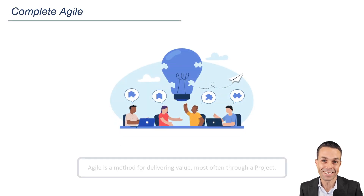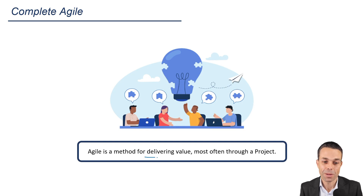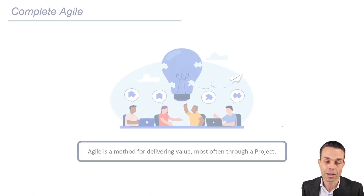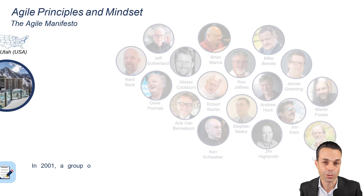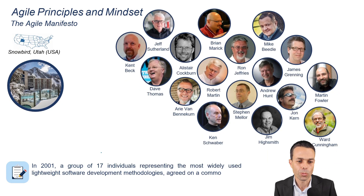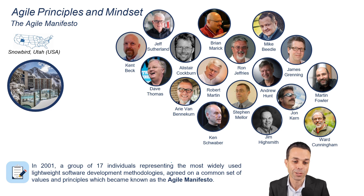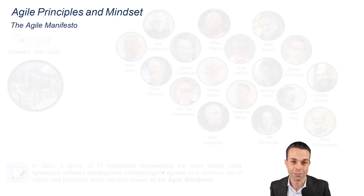First of all, what is Agile? Agile is a method for delivering value, most often through a project. We're delivering a change, and usually we're delivering it in incremental pieces so we can deliver value quickly. In 2001, a group of 17 individuals representing the most widely used lightweight software development methodologies at the time agreed on a common set of values and principles, and this became known as the Agile Manifesto.